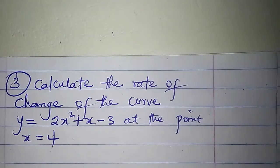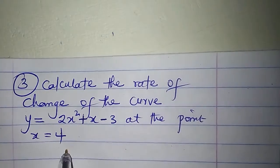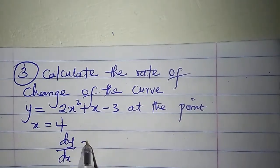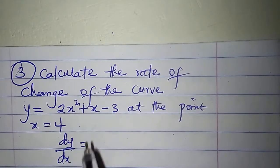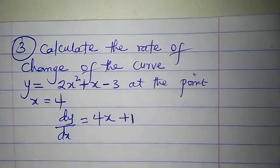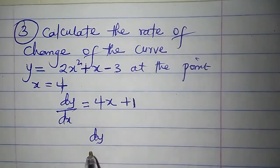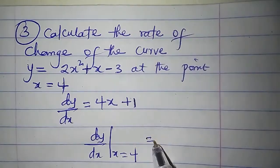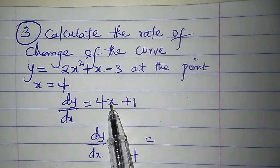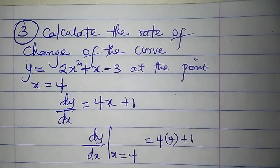The rate of change can also be dy/dx. If I am to calculate the rate of change of the curve y = 2x² + x - 3 at the point x = 4, I find dy/dx: differentiate 2x² to get 4x, differentiate x to get 1, differentiate minus 3 to get 0. At x = 4, dy/dx equals 4 times 4 plus 1: 4 times 4 is 16, and 16 plus 1 is 17.